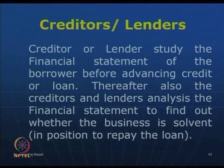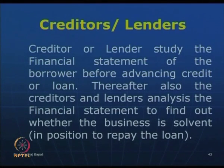The third important stakeholders are creditors or lenders. When a bank gives a loan to a company, it naturally asks for all financial statements — not only at the time of releasing the loan but also every 3 or 6 months — because banks want to ensure the business continues to have the capability to repay their loans. Similarly, there are business creditors: suppliers who give goods on credit also check the financial status of the company to know the repayment capacity. Financial institutions, banks, and suppliers all become important stakeholders.